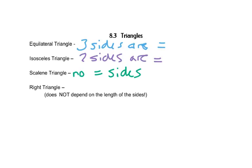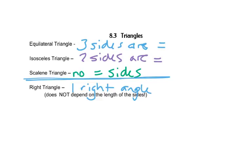A right triangle is a triangle that has one right angle. And a right triangle does not depend on the length of the sides — it could be isosceles, it could be scalene and still be a right triangle.